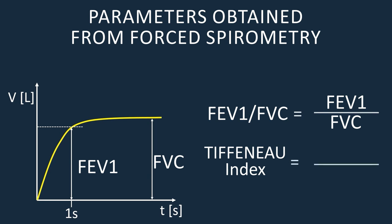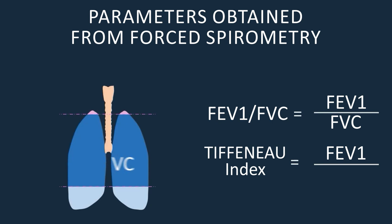The relationship between FEV1 and vital capacity is called the Tiffeneau index. The vital capacity obtained in simple spirometry should coincide with the forced vital capacity since the volume of air that that person can mobilize is the same regardless of the speed with which the air is expelled.